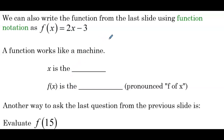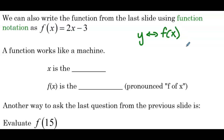That concept is what we're going to base evaluating functions off of. We can also write the function from the last slide using function notation as f(x) = 2x − 3. It's important to pause and take in this new notation — this is function notation. Now that we've learned function notation, most of what we're going to be given is going to be in function notation. It's important to understand that y and f(x) are like synonyms in an English class — they're used interchangeably. We might say y = 2x − 3, or we might say f(x) = 2x − 3. They represent the same graph and the same function.